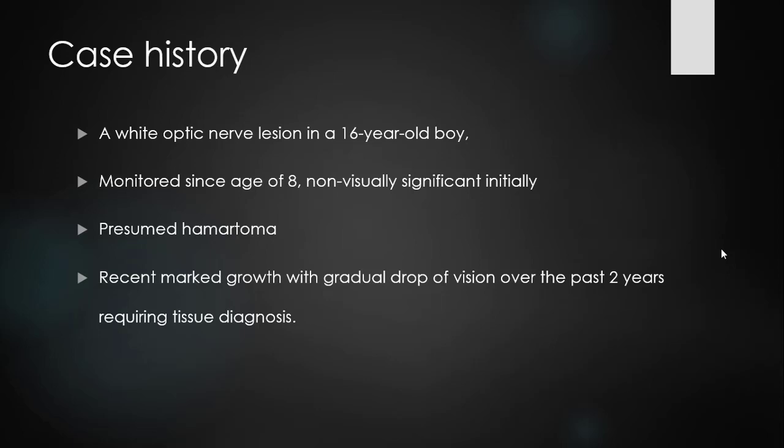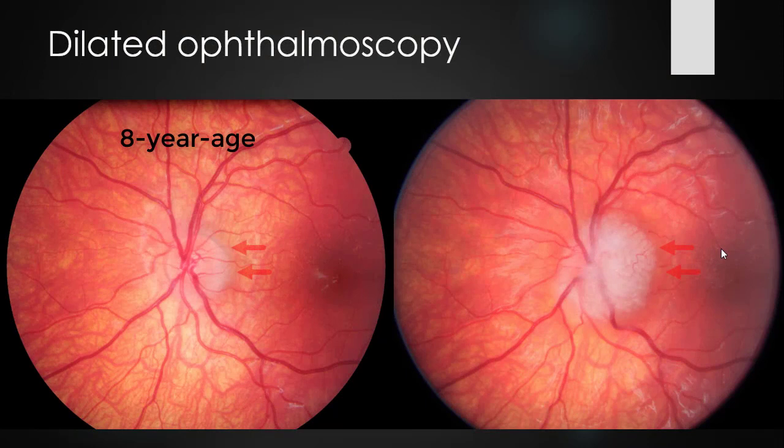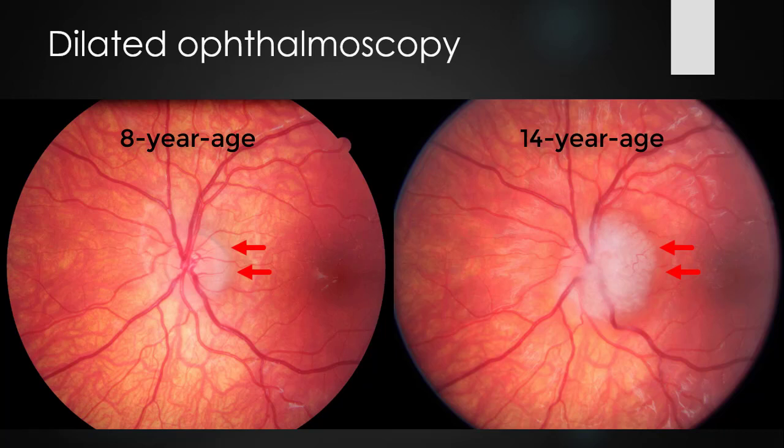Presumed diagnosis was astrocytic hamartoma. Over the past two years, the lesion grew markedly with gradual drop of vision. The lesion started as subtle whitish material on the optic disc margin. Over the years, it grew and extended beyond the margins of the optic disc.